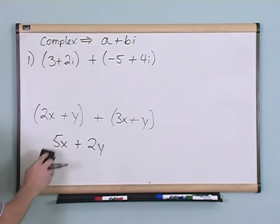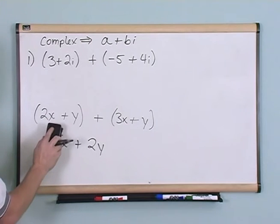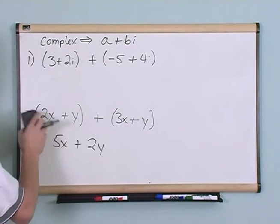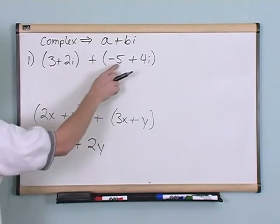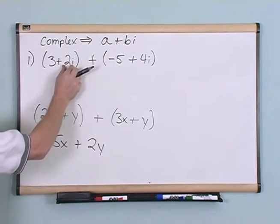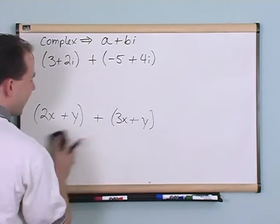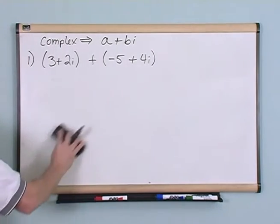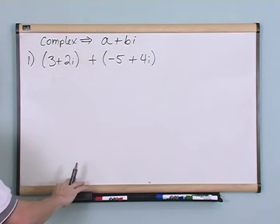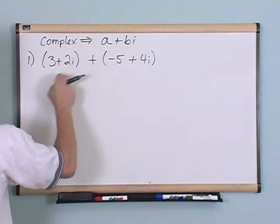What I'm trying to point out to you is the complex numbers is no different than the knowledge you already have. This is a like term with this. This 2i is a like term with the 4i. So in that context, you can kind of treat the i almost like a variable.